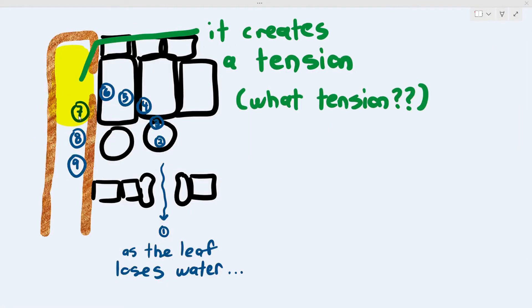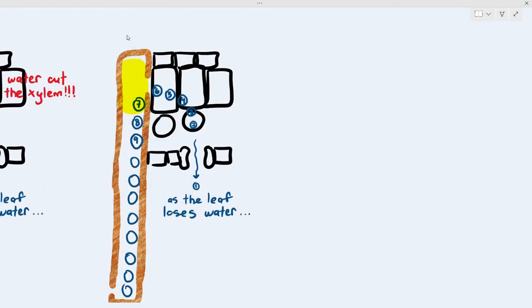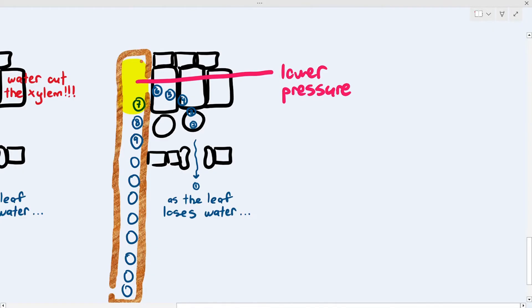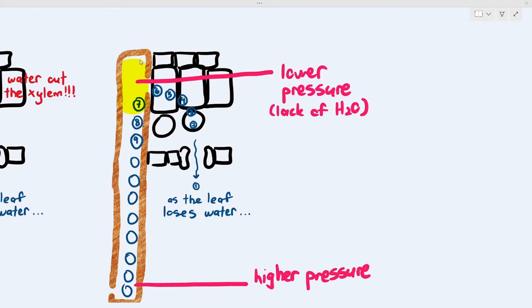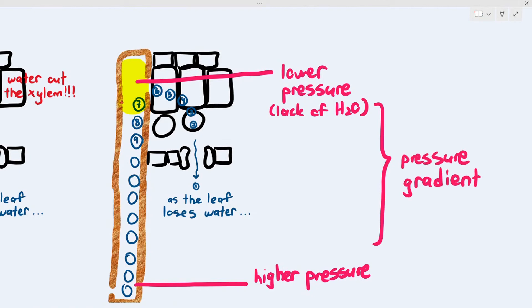What exactly is tension? When the water in the xylem — water molecule number six — moves into the leaf cells, there is less water at the top of the xylem. This creates tension, which basically means the top of the xylem now has a lower pressure, due to the lack of water. By comparison, the bottom of the xylem still has a higher pressure. Because the top of the xylem has lost some water, the pressure there decreased, creating a pressure gradient.